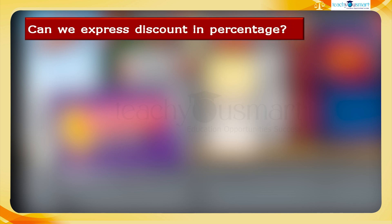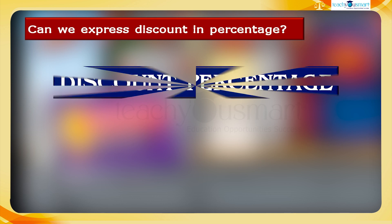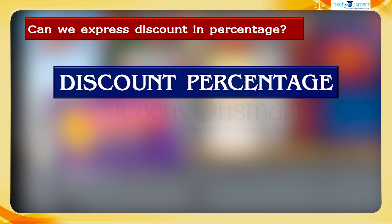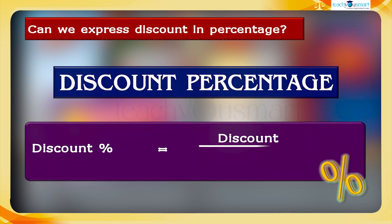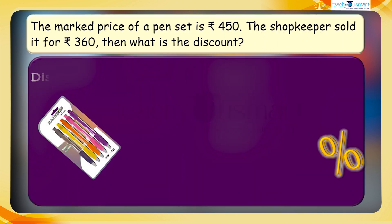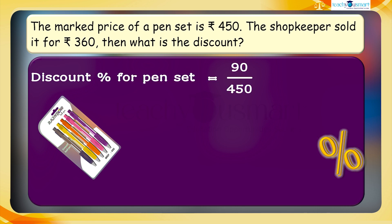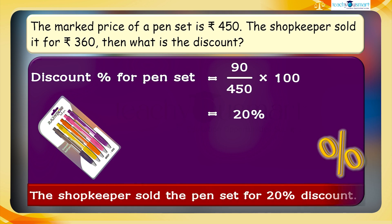Can we express discount in percentage? Yes, we can — it is called discount percentage. Discount percent equals discount divided by marked price, multiplied by 100. For the pen set, discount percent equals 90 divided by 450, multiplied by 100, equals 20 percent. The shopkeeper sold the pen set at a 20 percent discount.